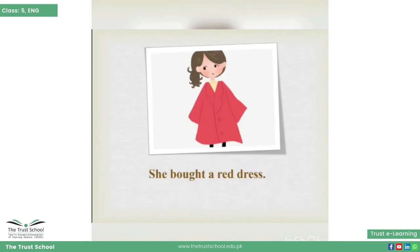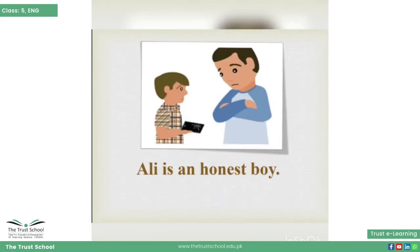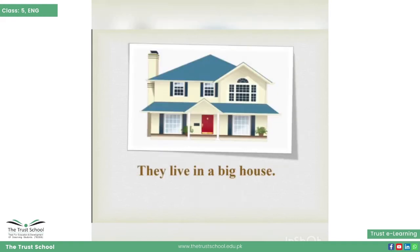Now let's discuss some examples. 'She bought a red dress' — is jumle mein word 'red' hume dress ke color ke baare mein batata hai. 'Ali is an honest boy' — in this sentence the word 'honest' is telling us about the quality of the boy. 'They live in a big house' — is jumle mein word 'big' se hume house ke size ke baare mein pata chalta hai.